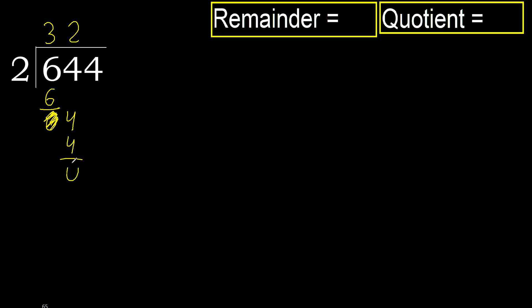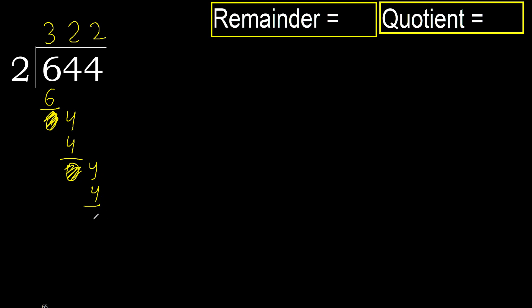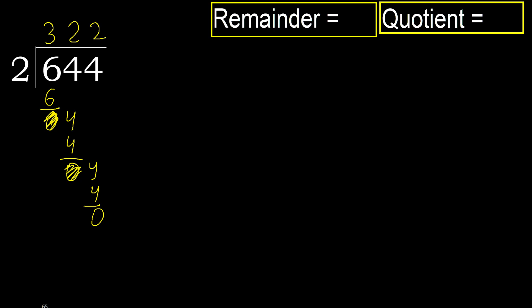Subtract. Next, bring down. 2 multiplied by 2 is 4. Ok, subtract. Next — that is not a number, therefore finish it.